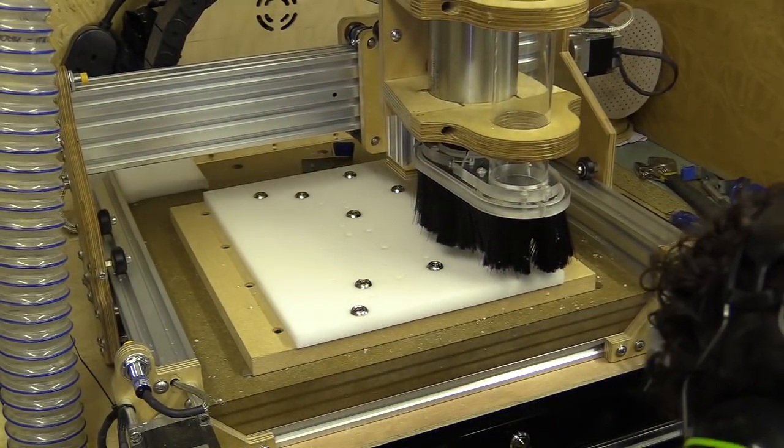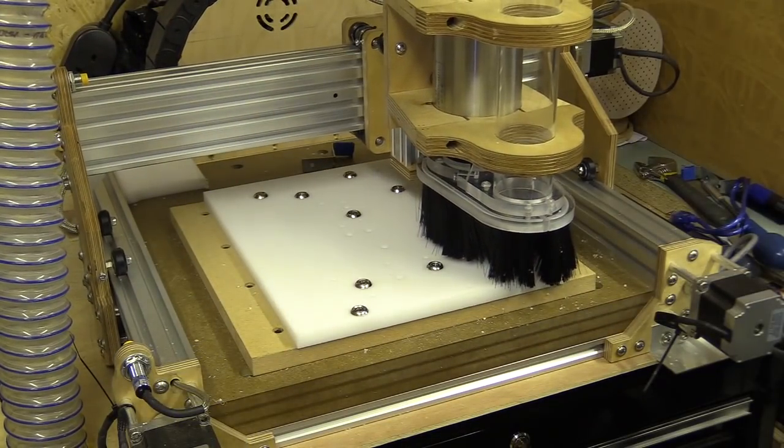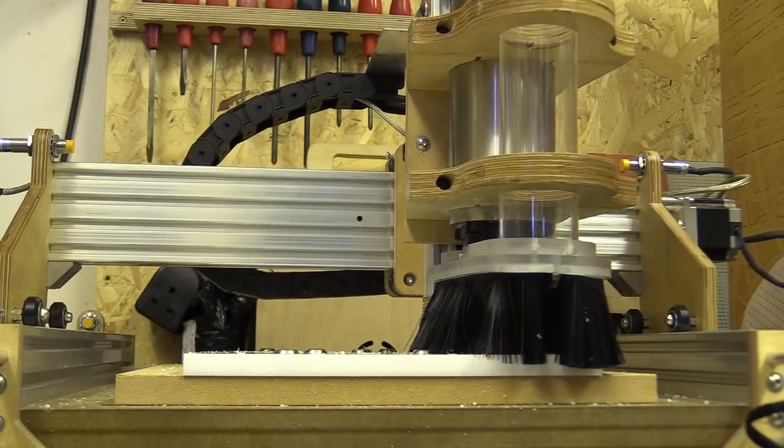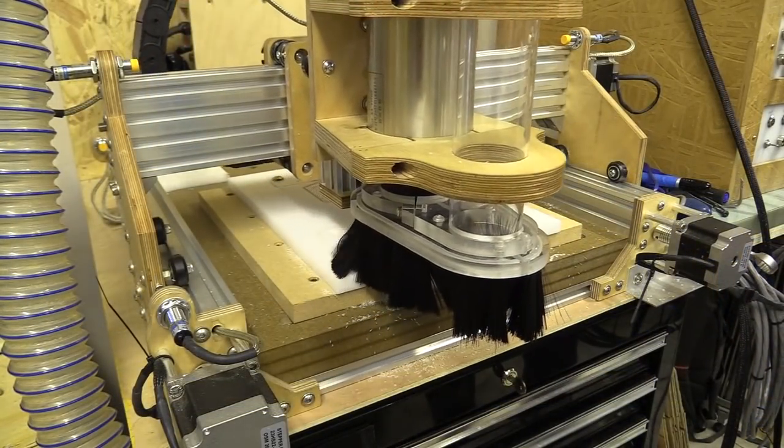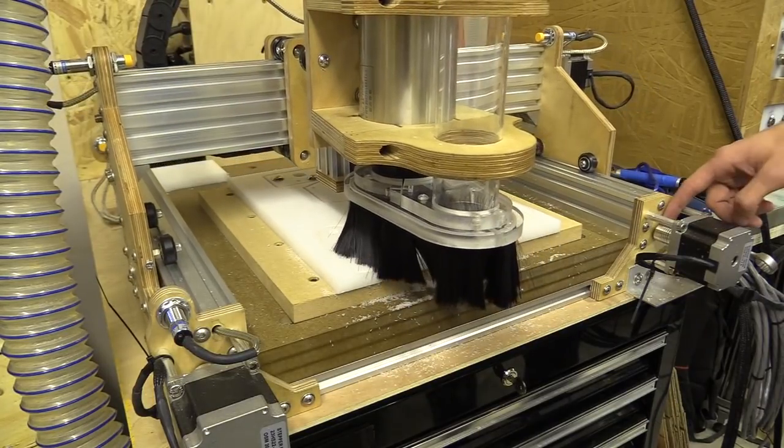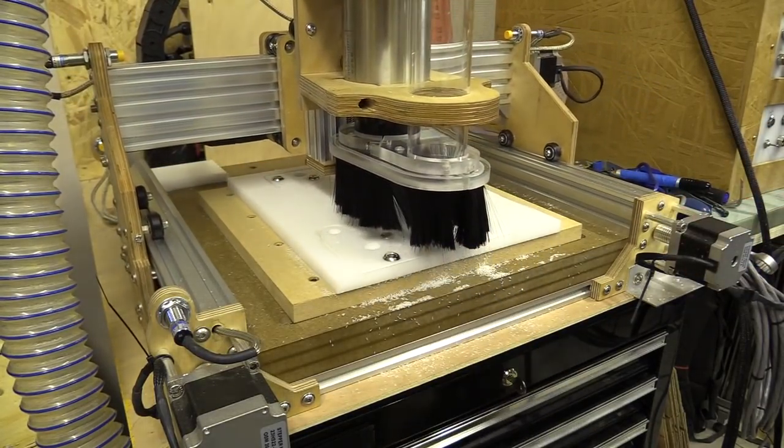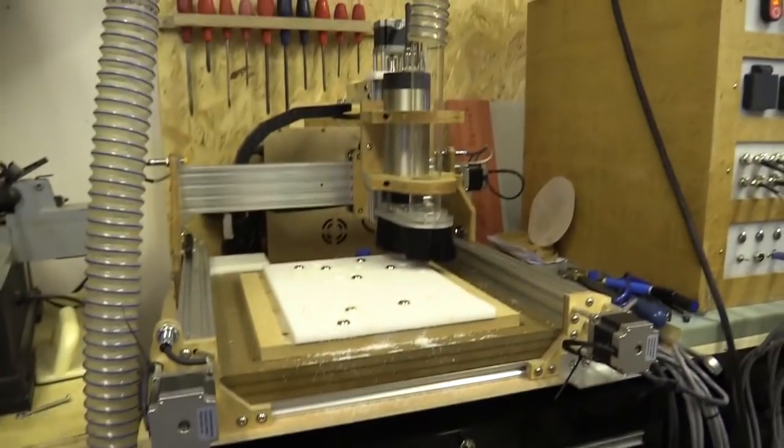I am cutting the second piece of acetal now. I used the same method of screws and cup washers to secure the material. It's worth mentioning between cuts I gently sanded any raised bumps on the MDF wasteboard caused by the screws. This will help the acetal lie flat against the wasteboard.